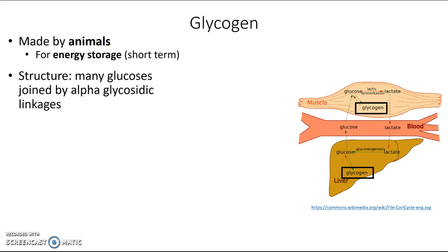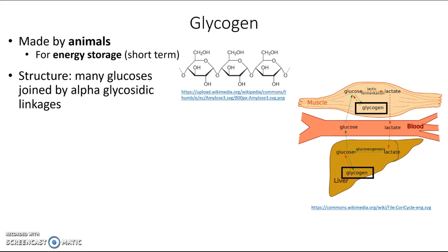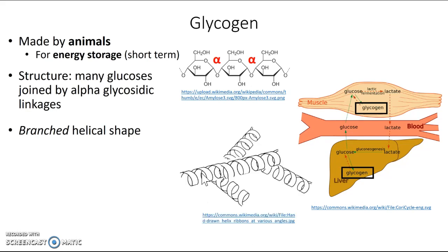In terms of the structure of glycogen, it's made of many glucoses joined by alpha glycosidic linkages — so there are those alpha linkages, and you know that causes the molecule to fold into a helical shape. But glycogen is actually a little different because not only is it coiled into a helix, it also has branches. You can see one main helix with other branches coming off it, all in that coiled shape.